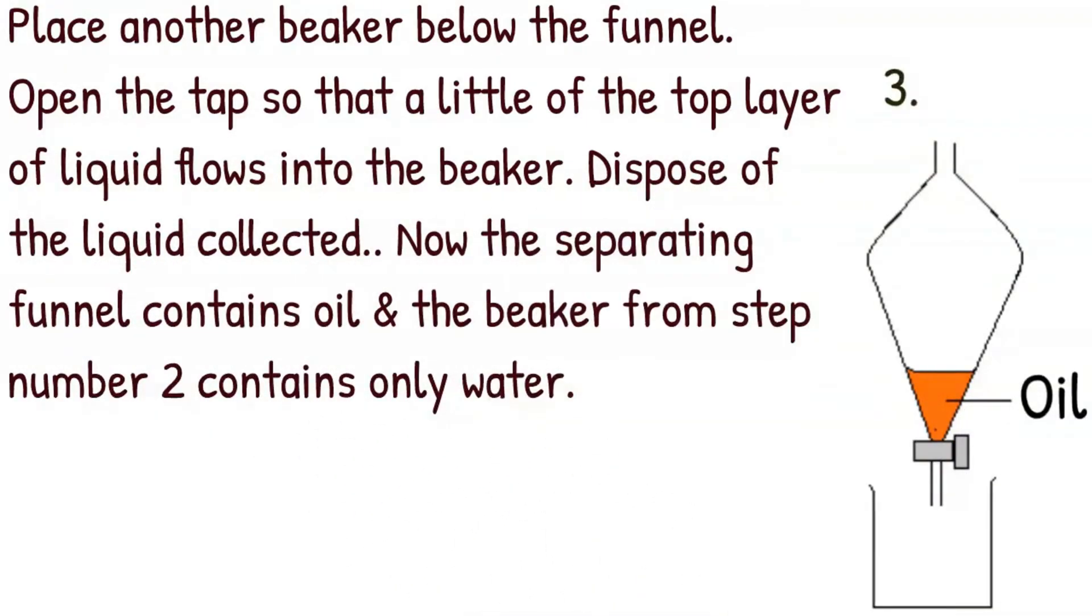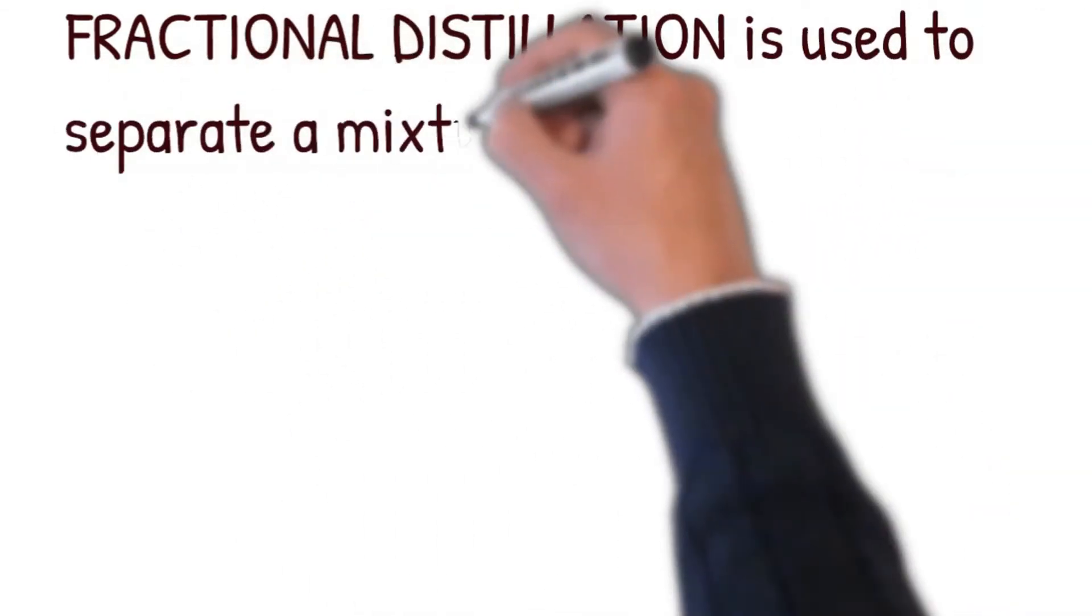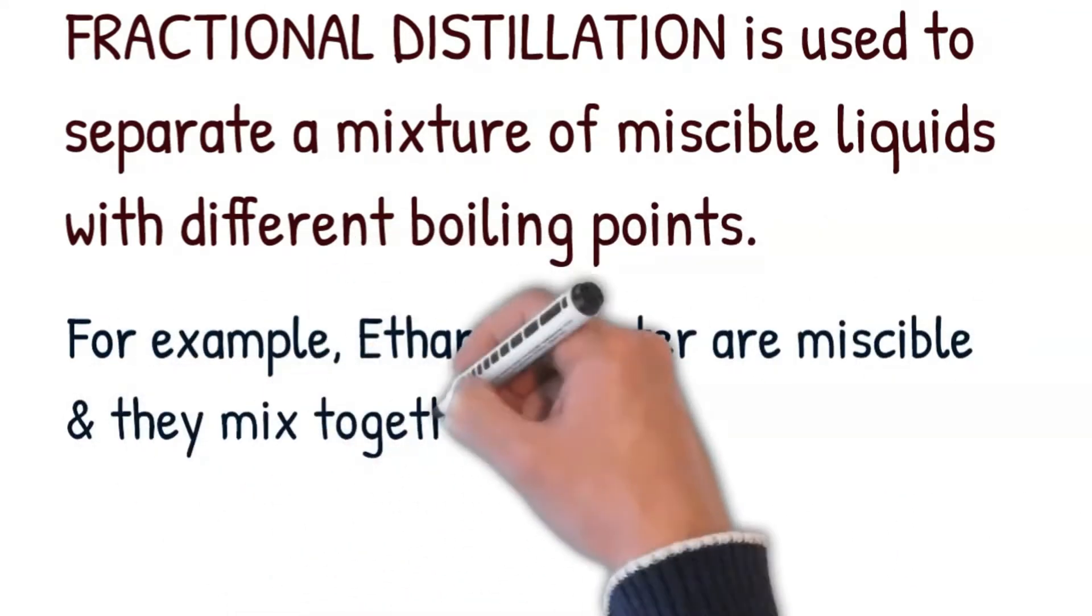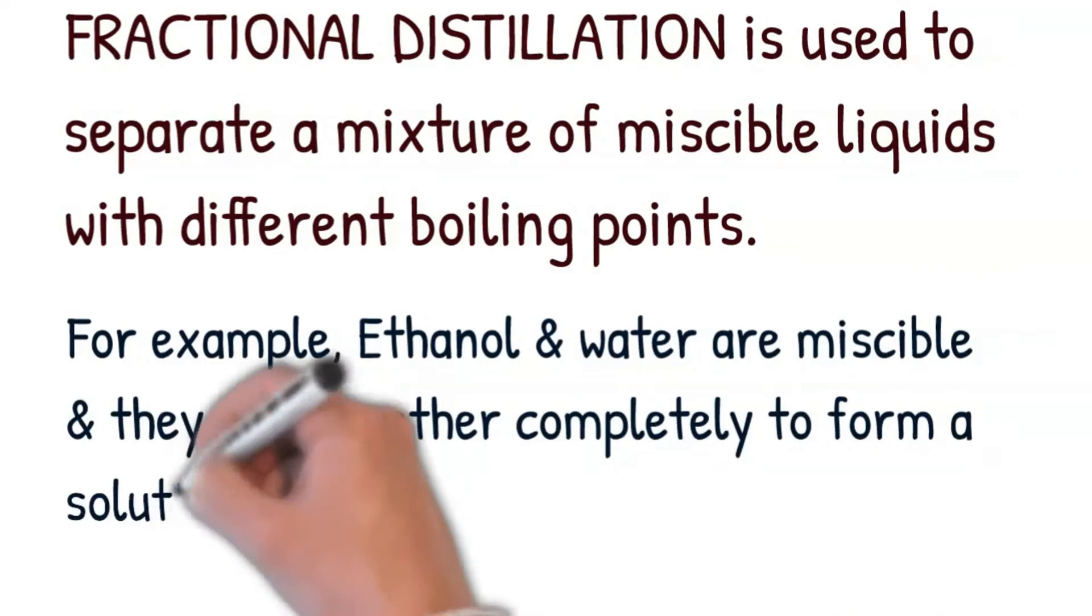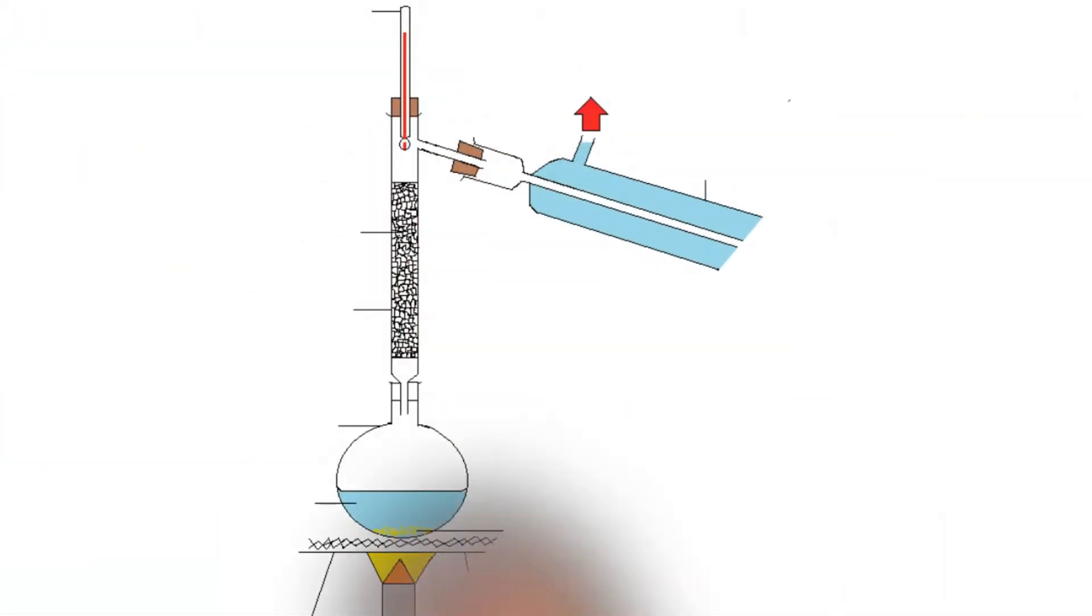Fractional distillation is used to separate a mixture of miscible liquids with different boiling points. For example, ethanol and water are miscible and they mix together completely to form a solution. Fractional distillation of water and ethanol.